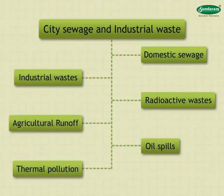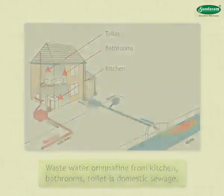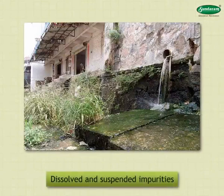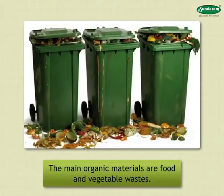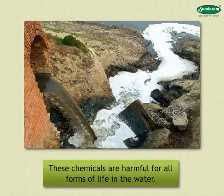Domestic Sewage: Waste water originating from kitchens, bathrooms and toilets is domestic sewage. Domestic sewage contains wide varieties of dissolved and suspended impurities. The main organic materials are food and vegetable wastes. Most detergents and washing powders contain phosphate, which is used to soften the water. These chemicals are harmful for all forms of life in the water.